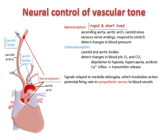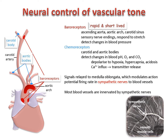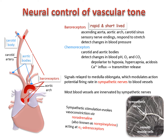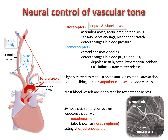Most blood vessels are innervated by sympathetic nerve fibres which, when stimulated, cause vasoconstriction, resulting in reduced blood flow and a rise in blood pressure. The effects are mediated by the neurotransmitter noradrenaline, which is released onto the smooth muscle cells where it acts on alpha-1 adrenergic receptors to evoke muscle contraction.